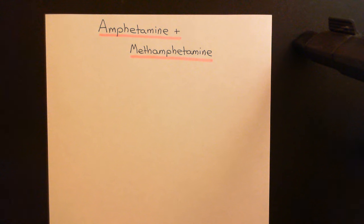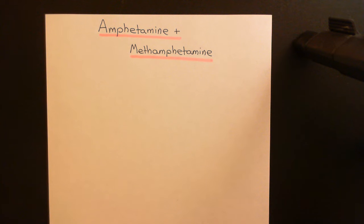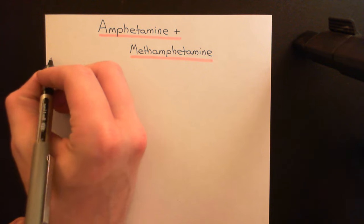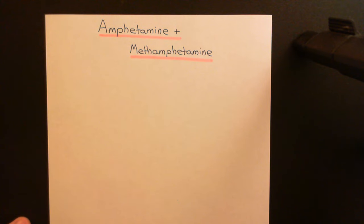Our first topic is what actually are these two drugs. Well, both of them are names given to a certain molecule — amphetamine is the name given to a certain chemical structure, and methamphetamine is also the name given to a certain chemical structure. So both of them relate to an actual drug molecule. I'm going to draw their chemical structures in skeletal form.